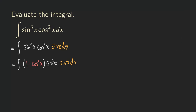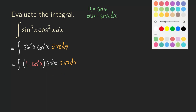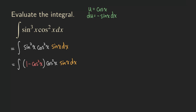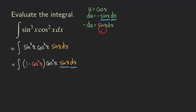We are going to let u equal cosine x. Then du would be negative sine x dx. As you can see, we do have sine x and dx in our integral. What we do not have is just that minus sign, so we multiply both sides by negative one and turn that equation into negative du equals sine x dx. Now we are ready to replace sine x dx with negative du, and all the cosines will turn into u.